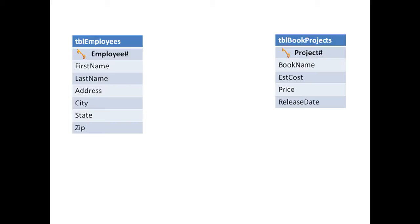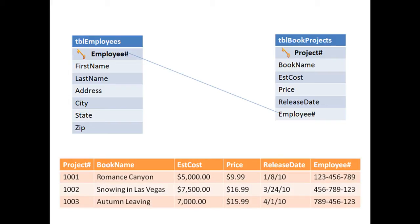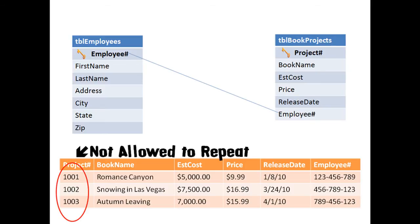Well, there are a few ways that we could relate these tables. First off, we could add an employee number field to our project table and relate those two tables through the employee number field. But there's a problem with that. If we look at the data table for TBL book projects, you'd see that the project number is not allowed to repeat because that's our table's unique identifier.